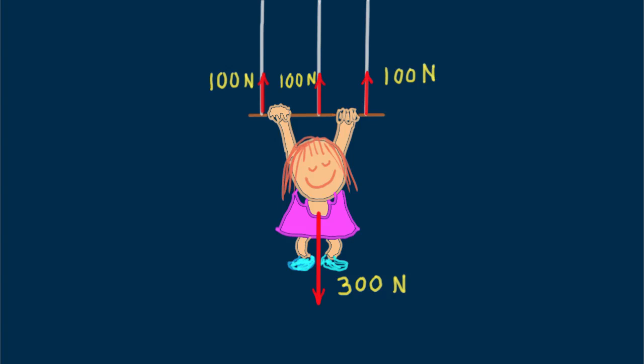Again, Nellie is in equilibrium. Let's go for two ropes. Again, evenly supporting Nellie. What's the tension in each rope? Can you see it's 150 Newtons?